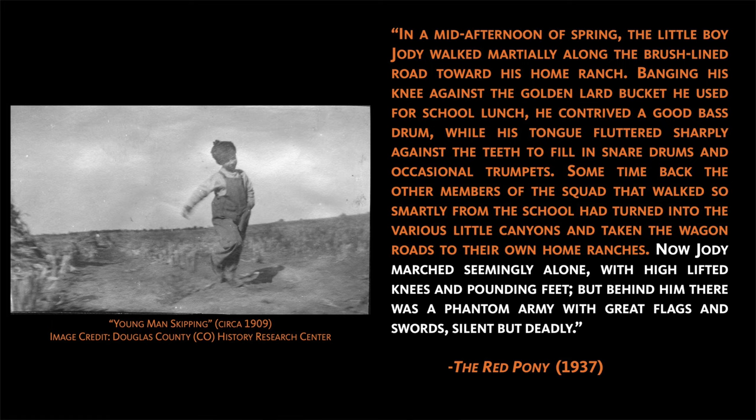This passage starts in a traditional third-person way, in which an outside narrator describes the action of a character — in this case Jody. But the last line of this passage does something different. Instead of describing to us what Jody is imagining — that he pretends he's marching in front of a phantom army — the narrator presents that army as if it were actually there, silent but deadly. In other words, at this moment, we're not seeing the world of a third-person narrator; we're seeing the delightfully boyish worldview of Jody.